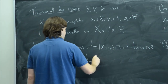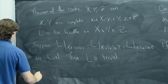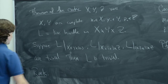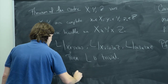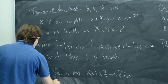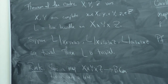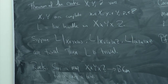A remark: giving a line bundle on a scheme is the same as giving a map from that scheme to the classifying stack BGm. So you can rephrase this theorem as saying that a map from X × Y × Z to BGm which is trivial on the three axes is trivial. When you say it that way, it looks like the rigidity lemma, but now the target is a stack. Because it's a stack, you need three factors in the product instead of two.